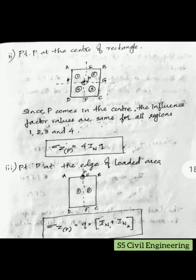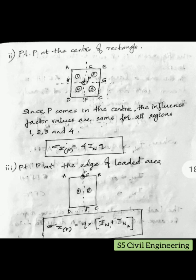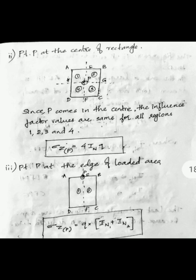Case three: point P lies at the edge of the loaded area. We have rectangular area ABCD and point P lies on edge AB. We divide the total area into two portions, one and two, cutting the rectangle into two parts. There will be two sets of influence factors, so sigma at P equals Q into (I_N1 + I_N2), dividing the whole rectangle into two portions.